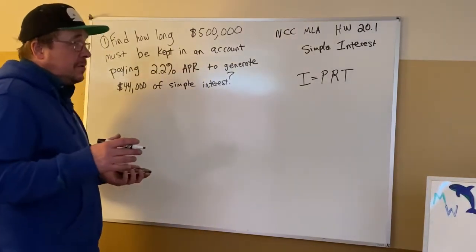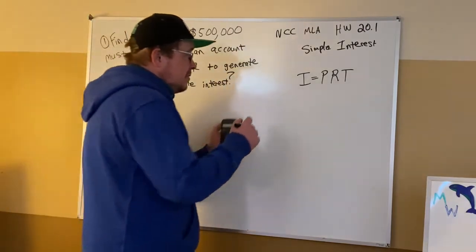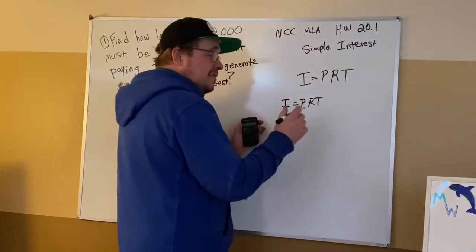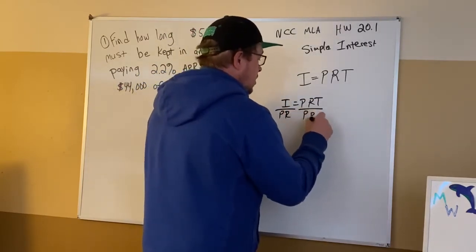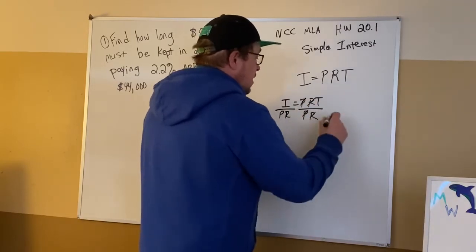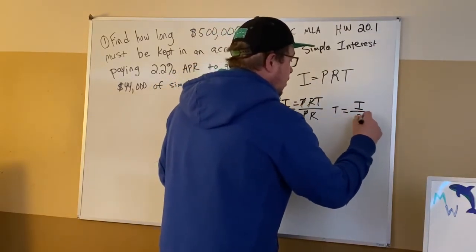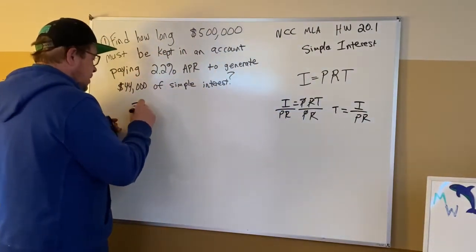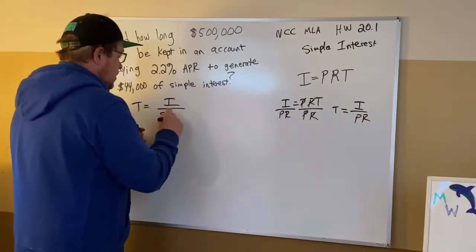Now what I suggest for some people if you're good at literal equations is let's get time isolated. So we'll take our I equals PRT, interest equals principal times rate times time, and let's get the T alone. So we divide each side by both P and R, cancel, and we'll find that T equals I over PR, and that's what I'm going to work with.